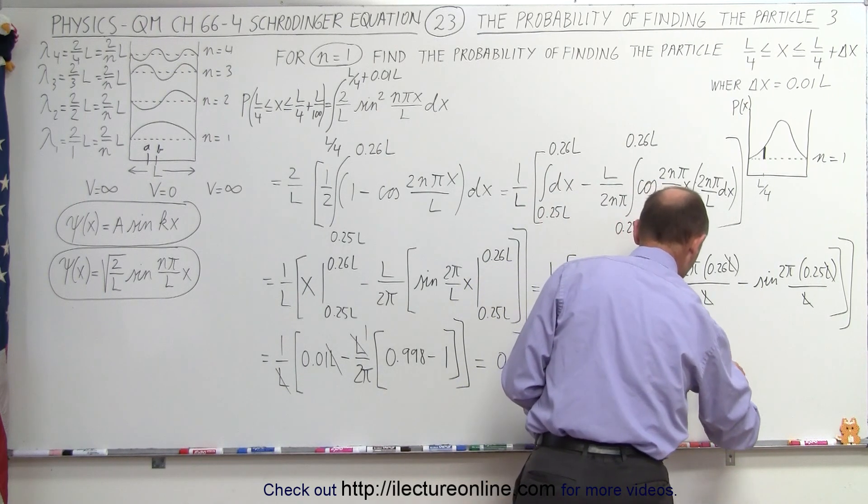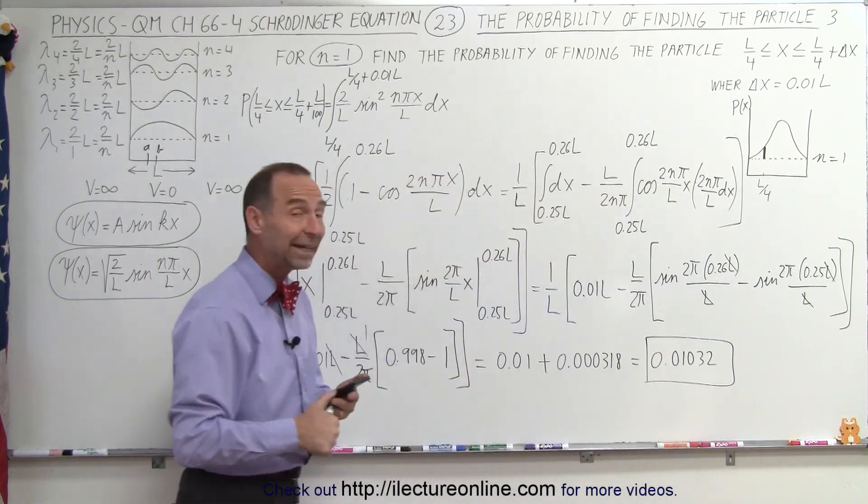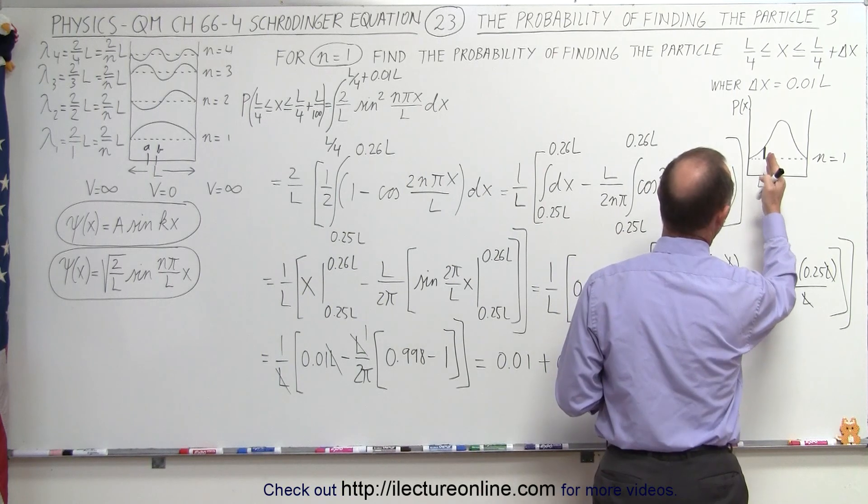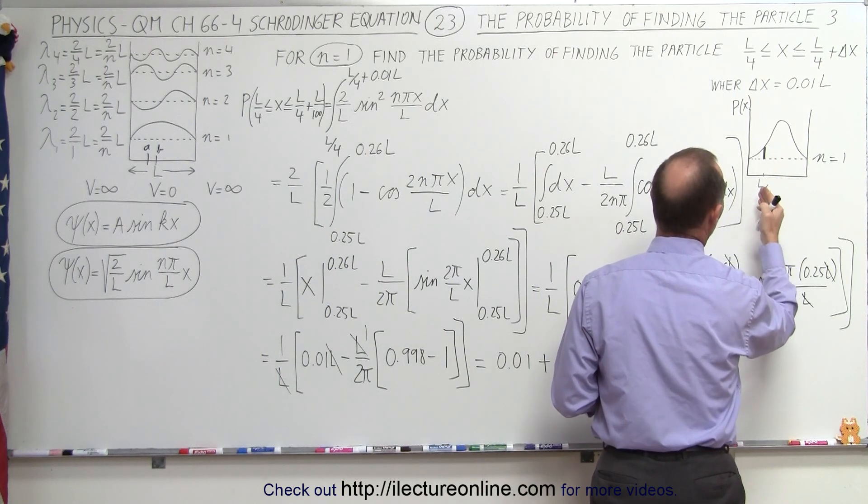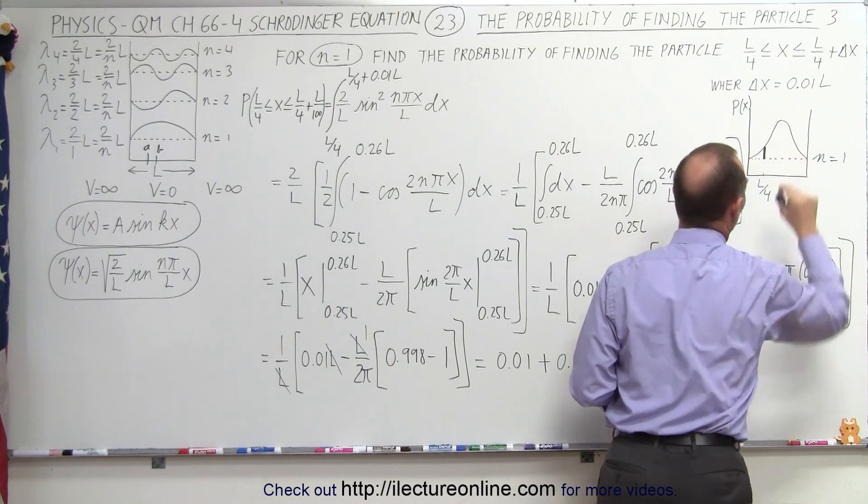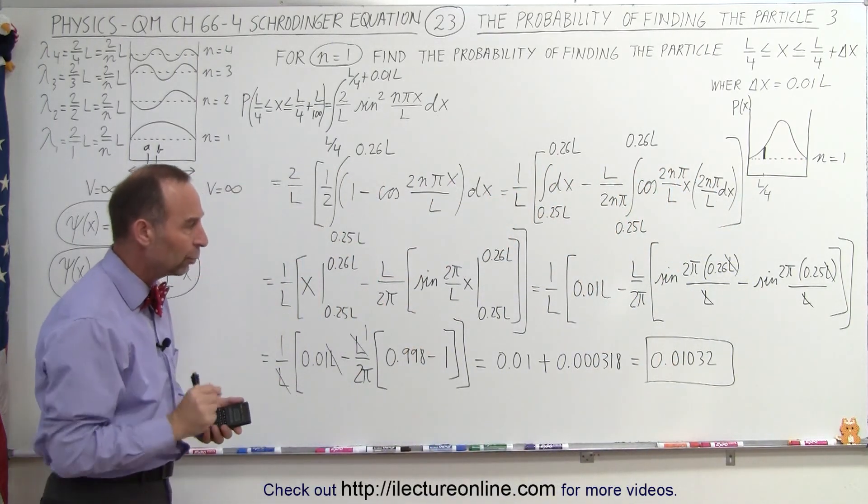I'll just go ahead and keep, maybe I'll just make it 0.01. So here is the probability of finding the particle in the region from x equals L over 4 to x equals L over 4 plus a small delta x, which is 0.01L. That's the probability of finding the particle right in that small little region there.